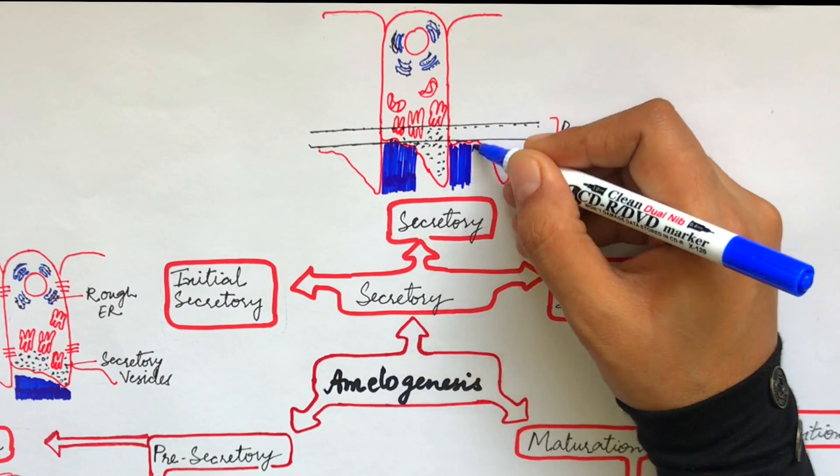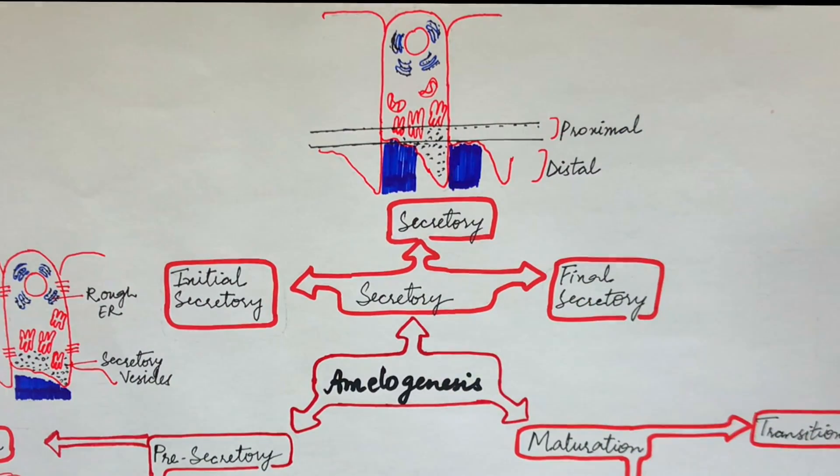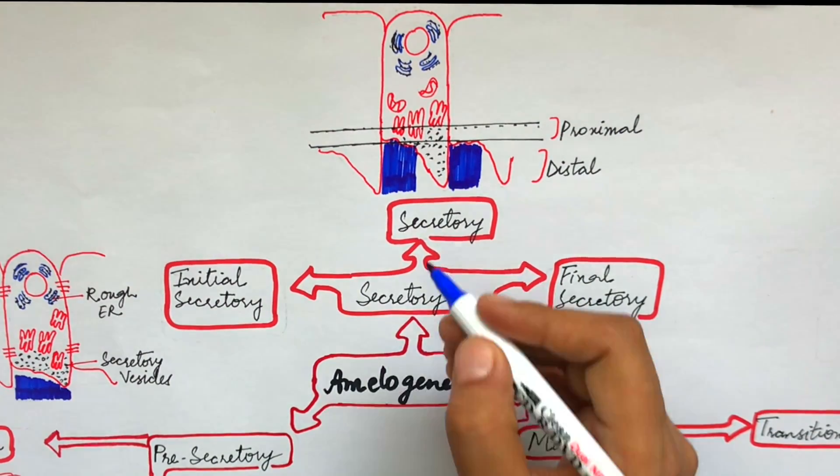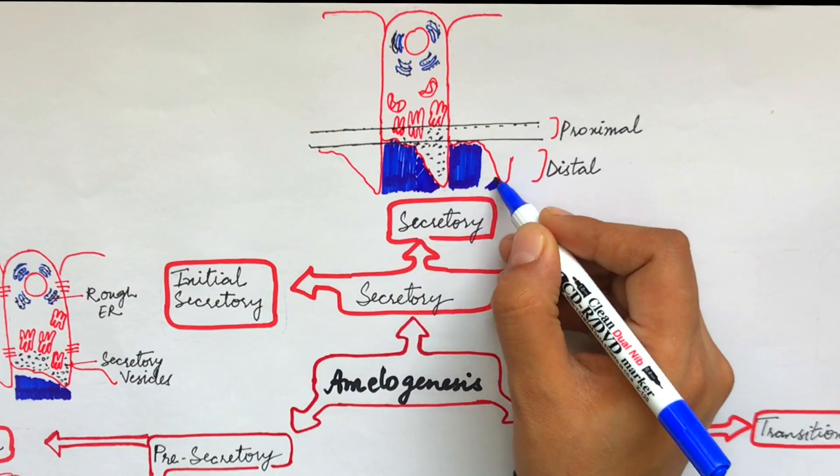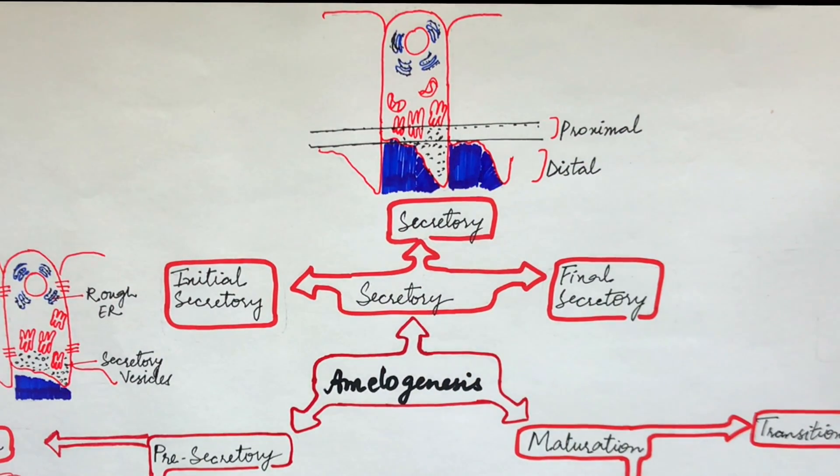The proximal portion is the first one to lay down the enamel matrix, resulting in the formation of preformed cavities for the distal portion of the Tomes' process to lay down the enamel matrix for the rod. Hence, the enamel matrix secreted at this phase will have both the rods and inter-rods in it.